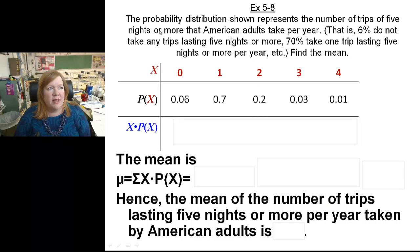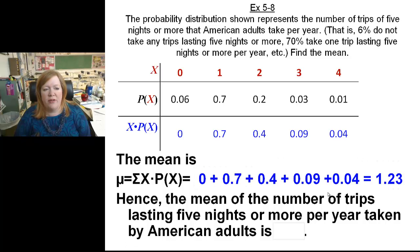Okay, next example, five eight. Probability distribution shown represents the number of trips five nights or more American adults take per year. So you've got six percent, seventy percent, twenty percent, three percent, one percent. To find the mean, you just multiply random variable x times its probability, you'll get those values. And the mean, you just add them all together, and you end up with the mean, which is 1.23.